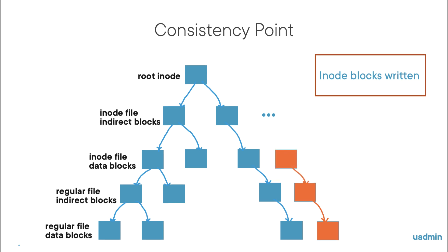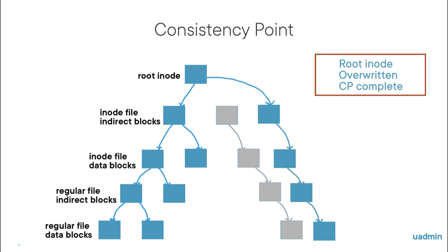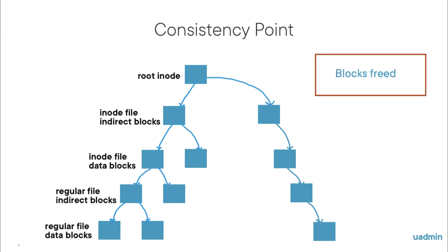Since WAFL never overwrites data blocks, new blocks will be written for every block that needs to be changed. And then finally, the root inode is overwritten, and will give a new view of the file system. So the only block that gets an overwrite is the root inode. And after that, the consistency point is complete, and the blocks on disk that are no longer needed can be freed to be reused again for new writes.